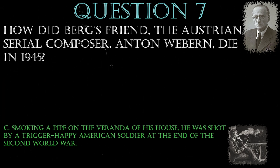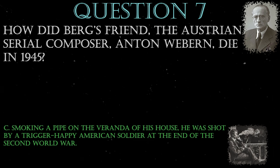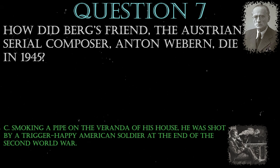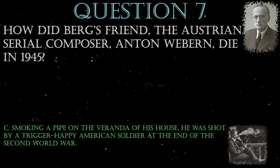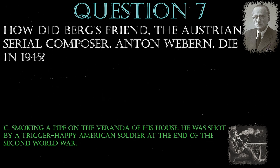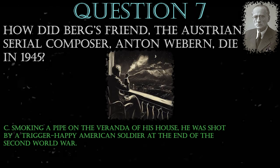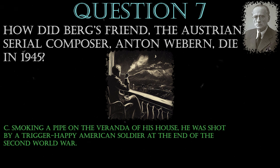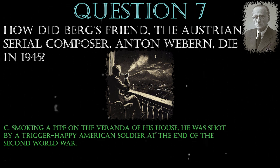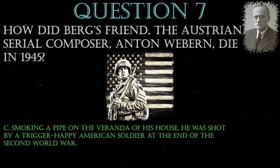Moving through the Second Viennese School, we come to poor old Webern — and there's a sad story here. The answer is C. After a relaxed family dinner on the evening of the 15th of September 1945, Anton Webern was enjoying a quiet nocturnal cigar outside a refuge where he was living with his extended family in the quiet alpine village of Mittersill, when he was accidentally shot by an American soldier. He was only 61 years old.